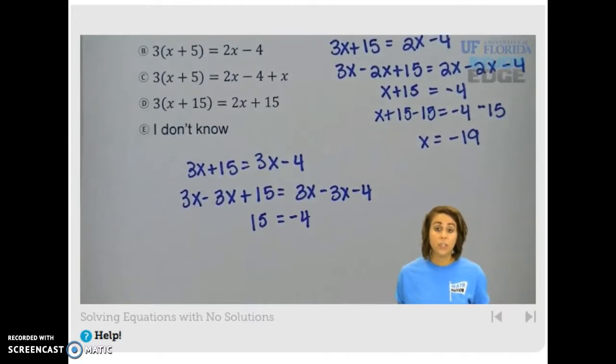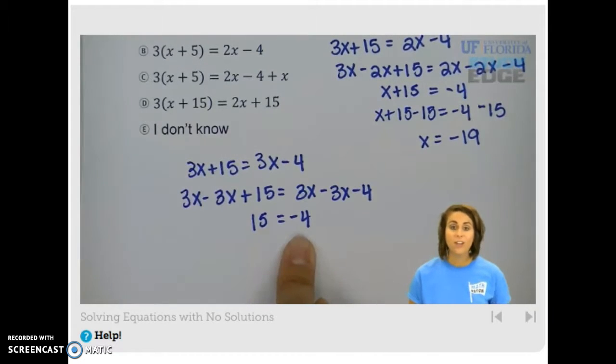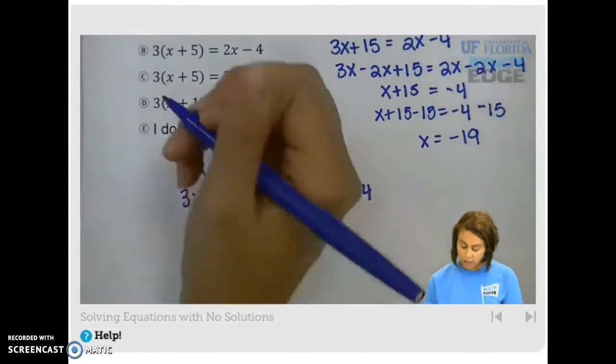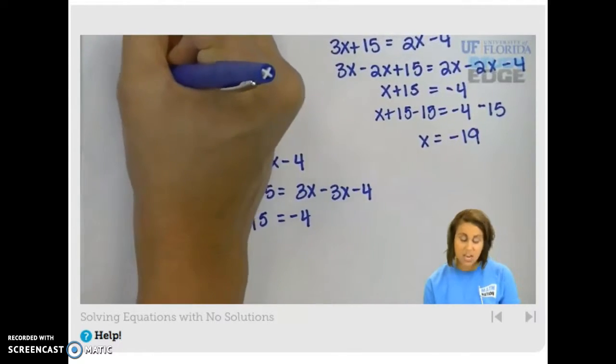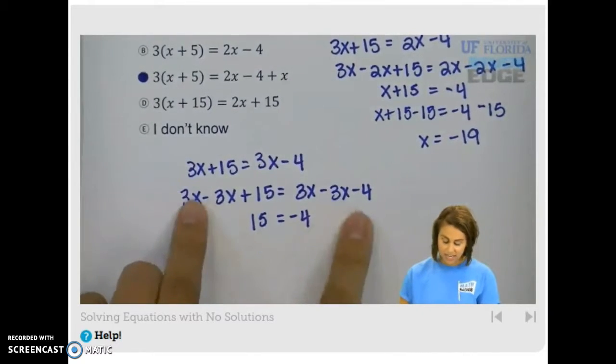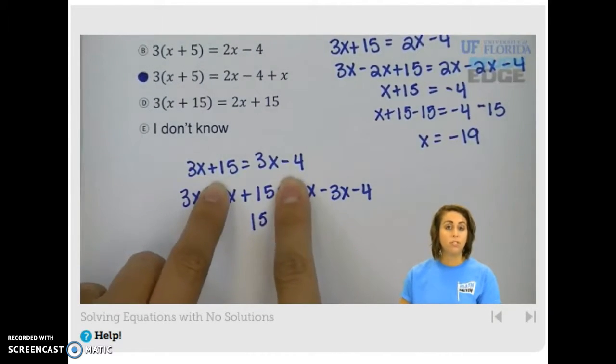When does 15 equal negative 4? Never. There's never going to be an x that we can plug in here that's going to give us a balanced equation with an equal number on both sides. So, there's no solution here. We're going to choose c because there's no x that we can plug in that's going to give us equal numbers on both sides here.